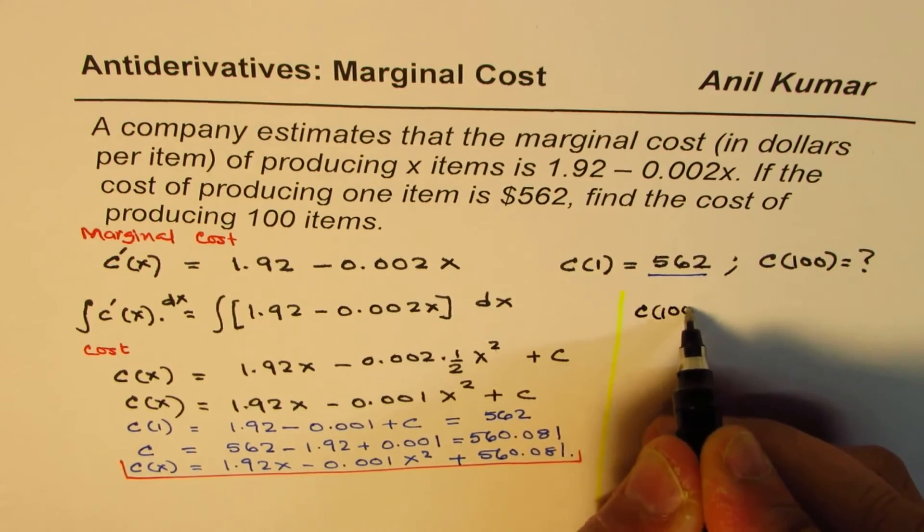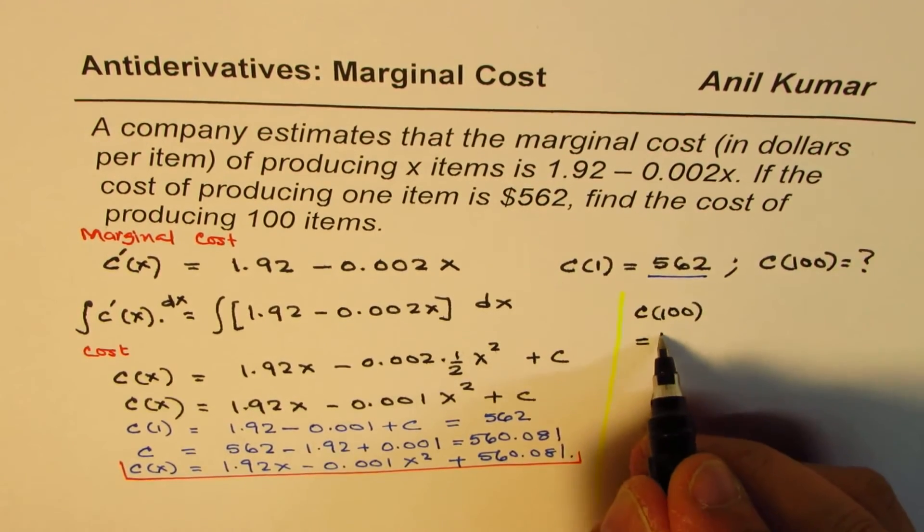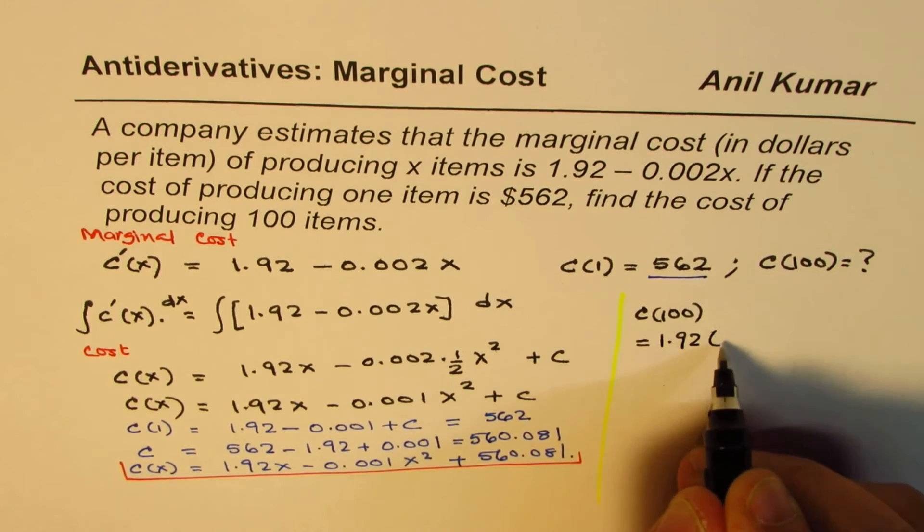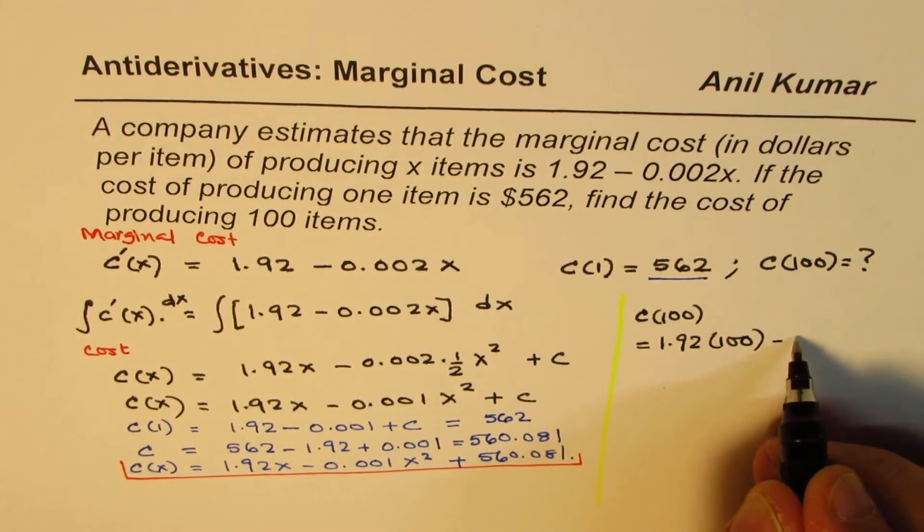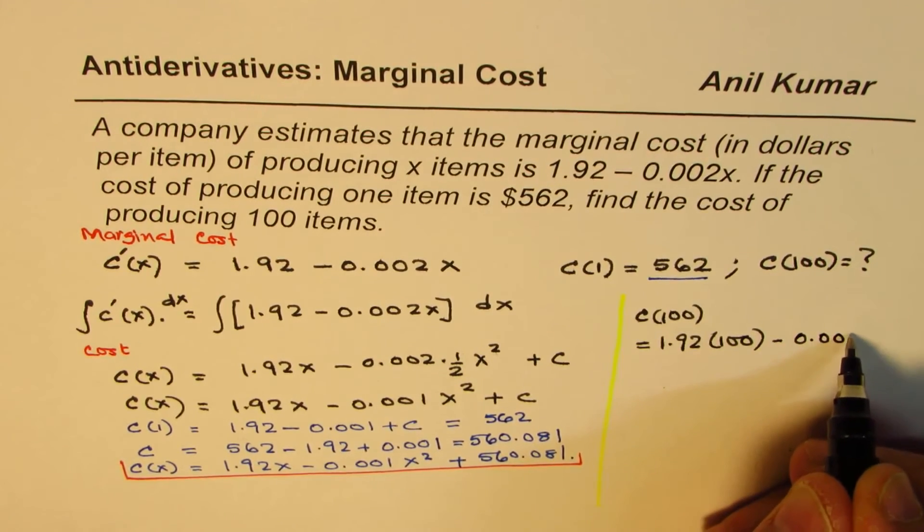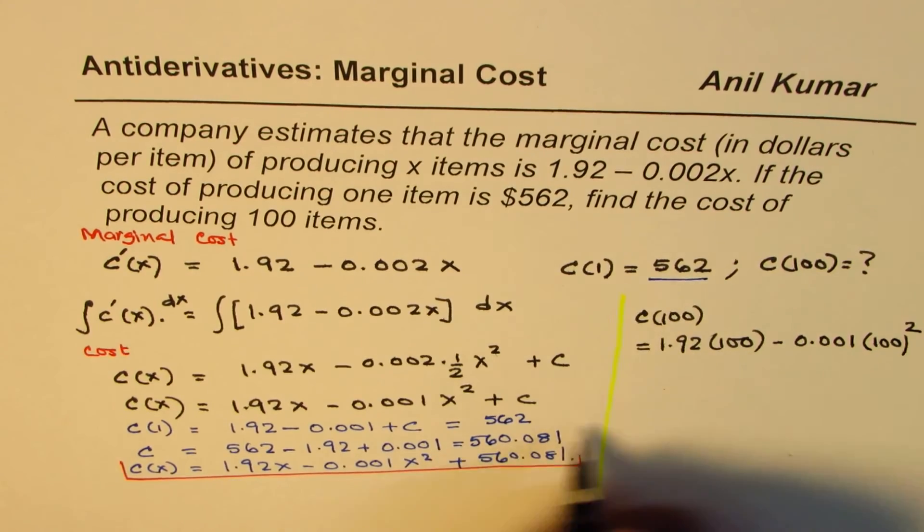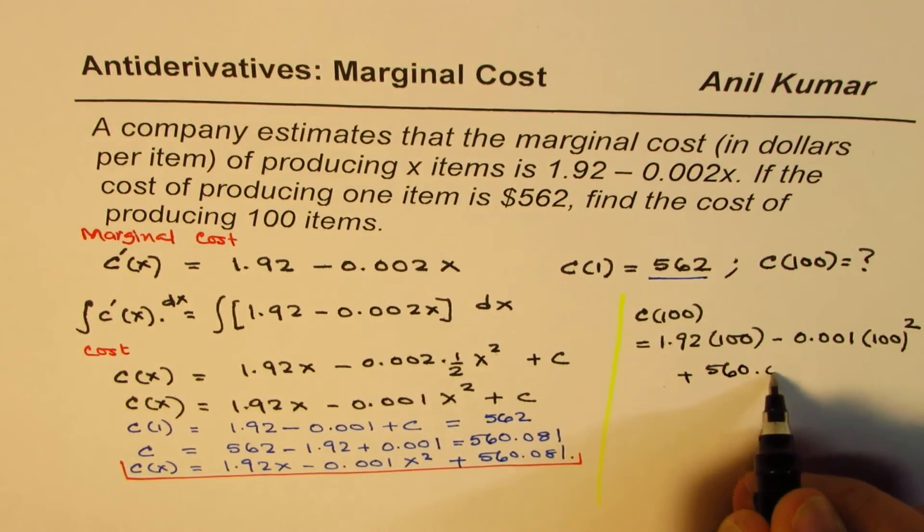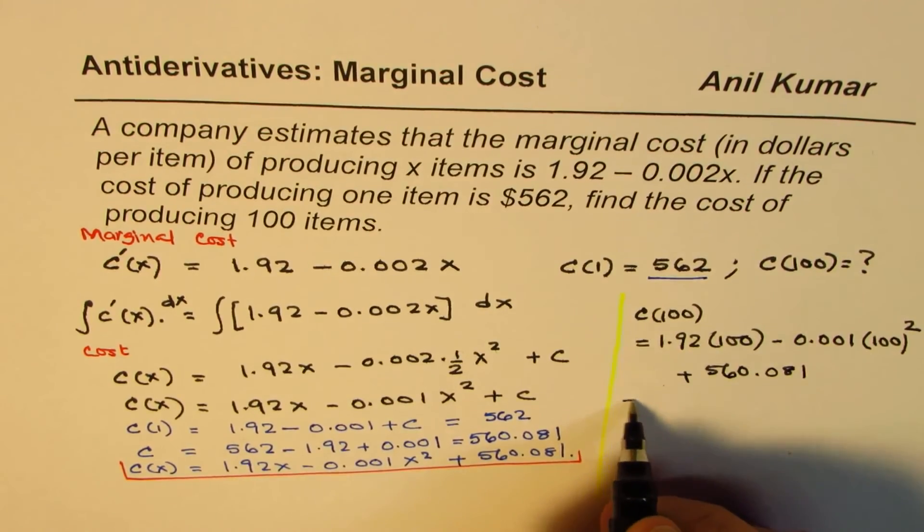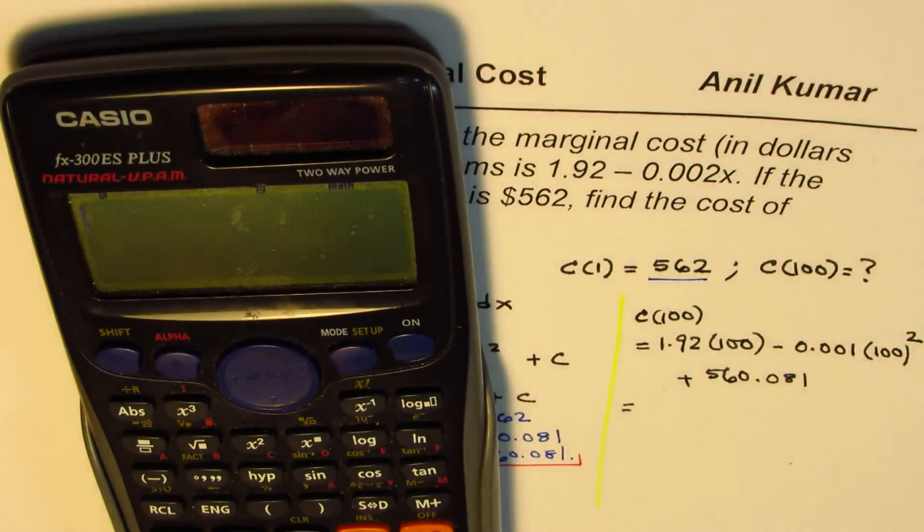We get C(100) equals 1.92 times 100 minus 0.001 times 100 squared. So what we have here is 1.92 times 100 minus 0.001 within brackets.